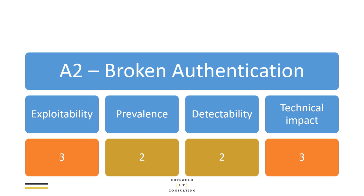This is the OWASP grid for the risk assessment for Broken Authentication. It's pretty easy to exploit because in most cases you could do it manually, but you can automate it as well. It's fairly common and fairly easy to detect using a range of tools. The technical impact is obviously pretty high — if you can log in as somebody else, you could potentially access anything on the site that anyone else would be allowed to see: private data, admin areas, things like that.